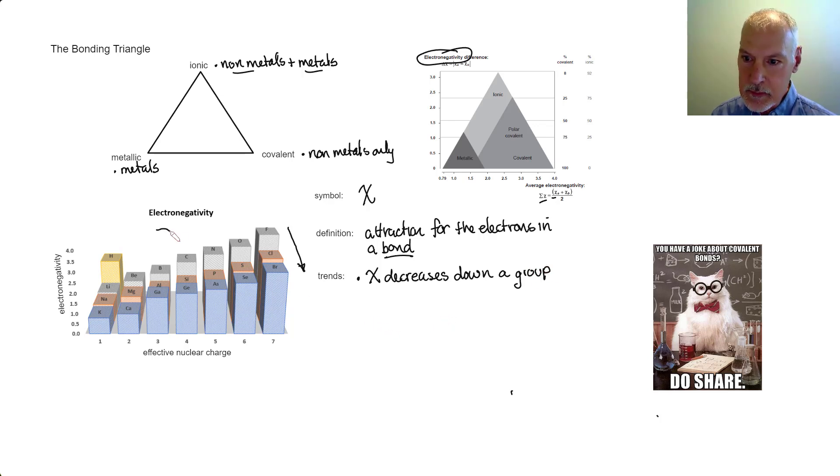Now let's look at the pattern as we move across the periodic table, from left to right. We'll notice here an increase in electronegativity. That's because there's a greater effective nuclear charge as we move across the periodic table. That greater effective nuclear charge increases the force of attraction on the electrons in the bond.